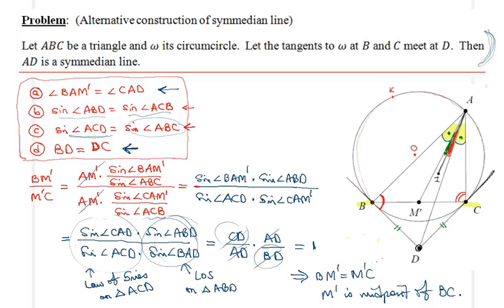Hello everyone. I would like to remind you of our previous proof here. We were given an alternative construction for the symmedian line involving the circumcircle and tangent drawn to the circumcircle at two vertices of our triangle. And we claimed they would meet at another point D. And connecting that point to the other vertex where we didn't draw the tangents will give you the symmedian.